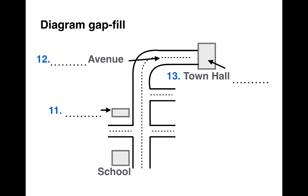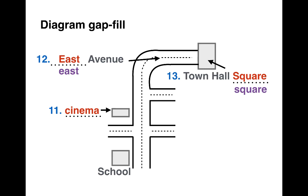And here are the answers. Number 11 was the cinema — it was on the left just after the crossroads. Number 12 was East Avenue, after Woods Lane. The other road not marked on the right was called Woods Lane. And Town Hall Square was at the end of East Avenue. Don't worry about capital letters — it's completely fine to write 'east' and 'square' without the capital. There is no rule about this in the IELTS test. They don't care at all about capital letters, uppercase or lowercase. You can write your answers any way you want, but the spelling must be correct — so 'square' needs to be spelled correctly, for example.